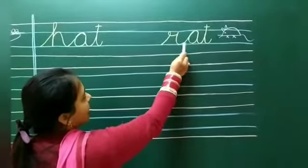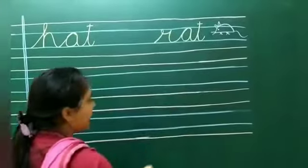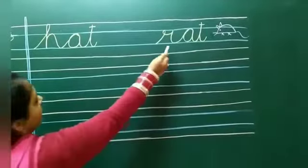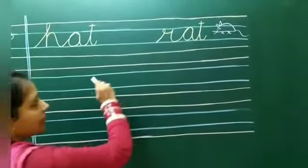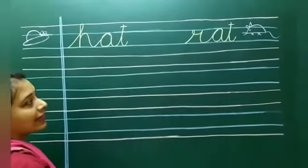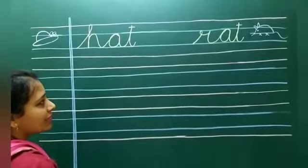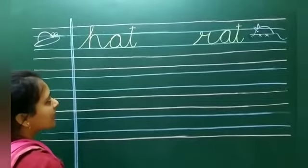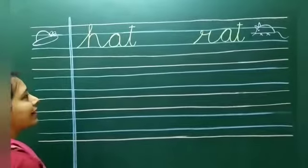This is rat, okay. So you can see hat and rat in print hand, and you can do it in cursive hand. Okay children, so let's see how to write cursive. Okay children, let's see, first we write H.